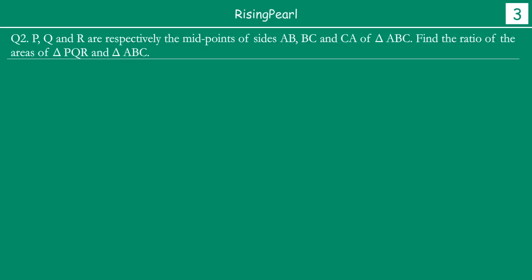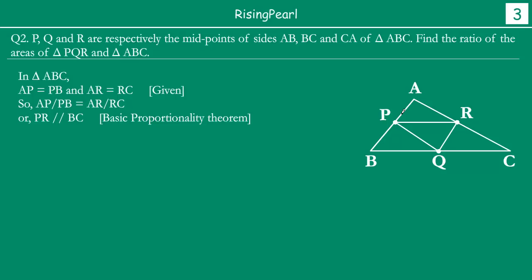We don't have the diagram given to us, so let's draw it ourselves. We have drawn triangle ABC and found the midpoints P, Q, R respectively — P is the midpoint of AB, Q is the midpoint of BC, and R is the midpoint of AC. If you look at triangle ABC, we have AP equal to PB and AR equal to RC, so AP/PB equals AR/RC, both ratios equal to 1. This means PR is parallel to BC by the Basic Proportionality Theorem — if a line divides two sides of a triangle in the same ratio, it is parallel to the third side.